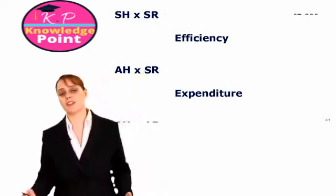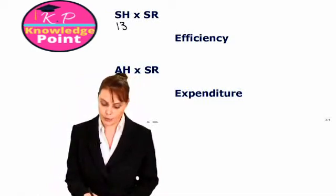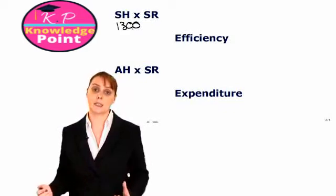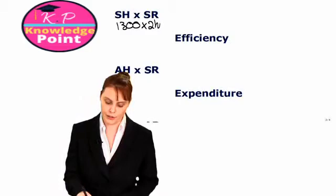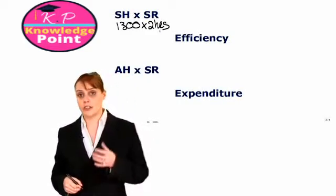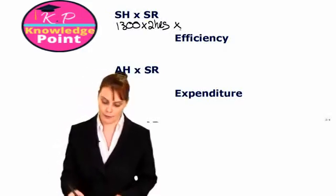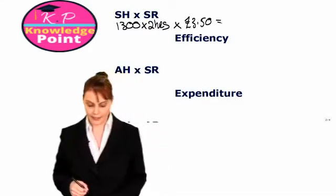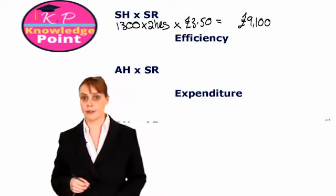Our standard hours at the standard rate: we take our actual production of 1,300 units, and how long do we expect it to take to produce each unit? Standard hours per unit are 2 hours. We value this at our standard variable overhead rate per hour, which is £3.50. When you calculate that through, you get £9,100.